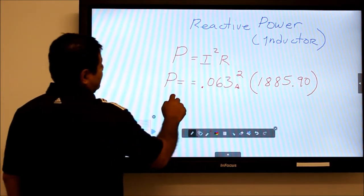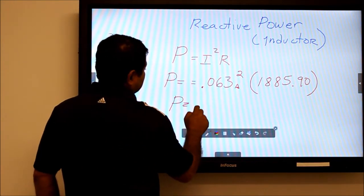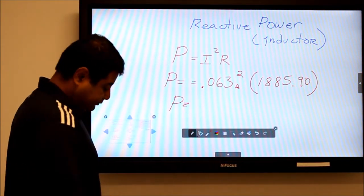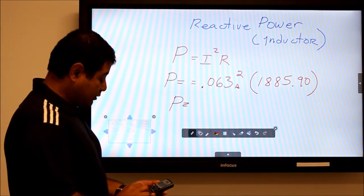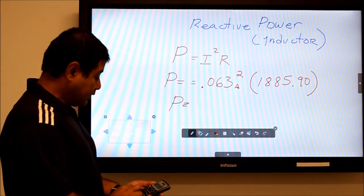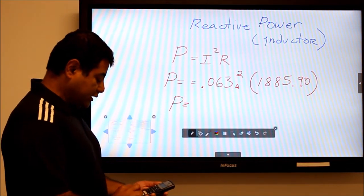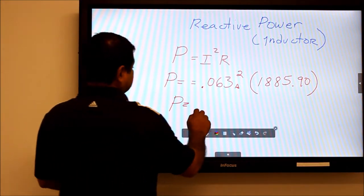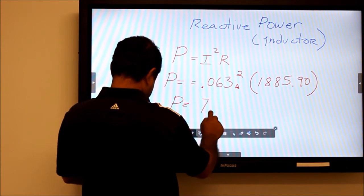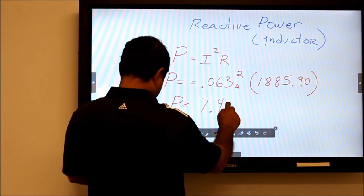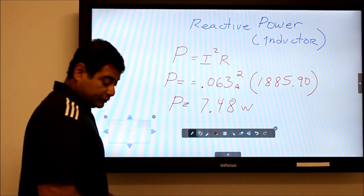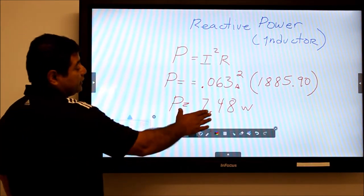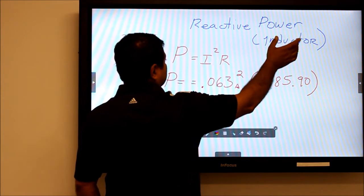Now you just put these values into your calculator: 0.063 amps squared times 1885.90, and I get 7.48 watts. So this is the reactive power, the power that comes from the inductor.